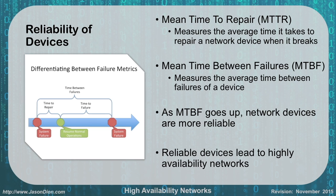When the mean time between failures goes up, the reliability of our network goes down. When we look at reliable devices, we want devices that are going to be up and operational as much as possible. If you have highly reliable devices, you're going to have a highly available network. In the graphic, we can see the time of a system failure, the time it takes to repair — that's our mean time to repair — and the time between when we fix it and when it breaks again is the time between failures. That's a graphical representation of MTTR and MTBF.